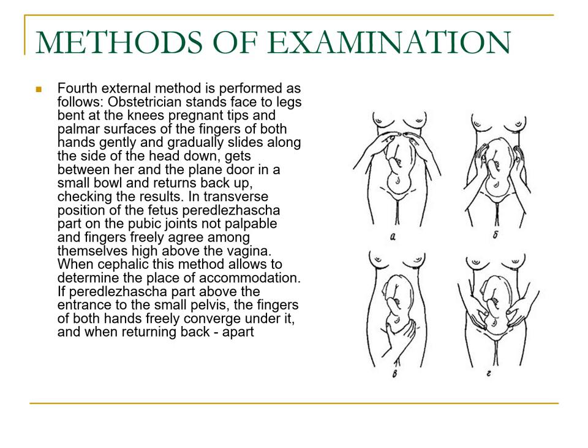The third maneuver is your Pawlik's grip, which is confirmatory of your first fundal grip. Your fourth external method is performed as follows: your obstetrician stands facing the legs, bent at the knees, of the pregnant patient, using the palmar surface of both hands placed on the lower abdomen as shown. The hands go between the fetal part and the plane of the pelvic inlet. If transverse, the fetal part above the pubic joint will not be palpable and the fingers will freely converge. When it is cephalic, this method allows you to determine the level of accommodation — whether the fetal head has entered the small pelvis.